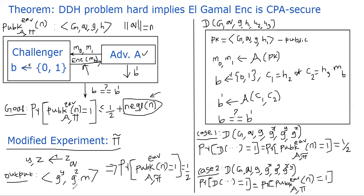Even though no one can recover M from this scheme, it is useful to know that an adversary seeing this output cannot recover M. Therefore, the probability that an adversary wins the game where the encryption is just the pair (G^Y, G^Z · M) is exactly one-half — the adversary can only win by random guessing.